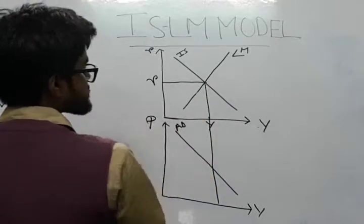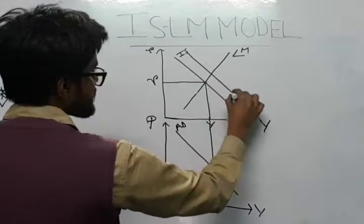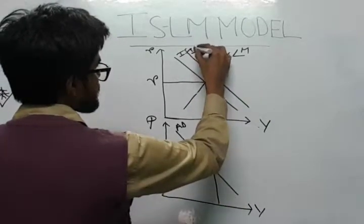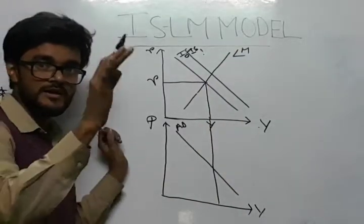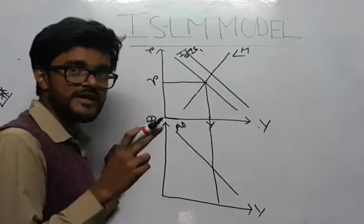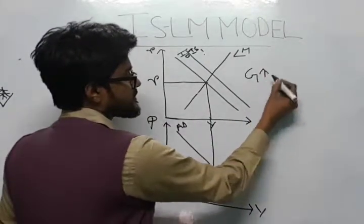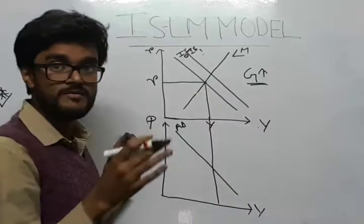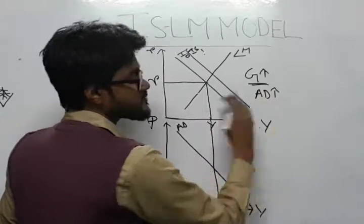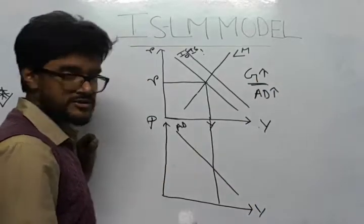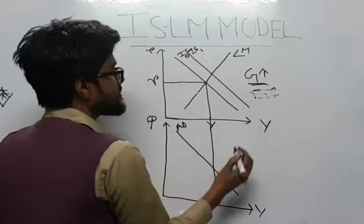Now what happens when the IS curve shifts rightward, from IS0 to IS1? Say for example, the government has decided to increase government expenditure. When government expenditure increases, the IS curve shifts rightward.